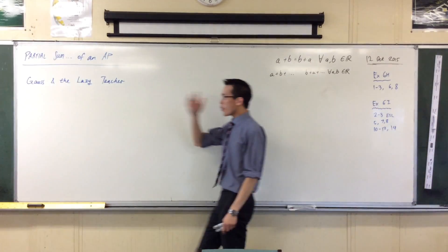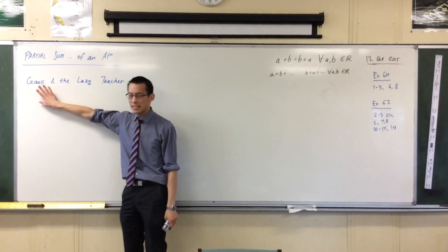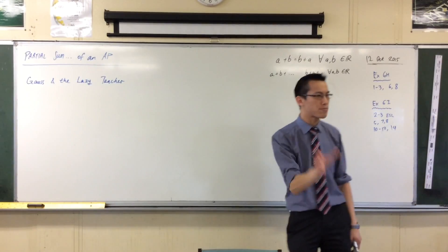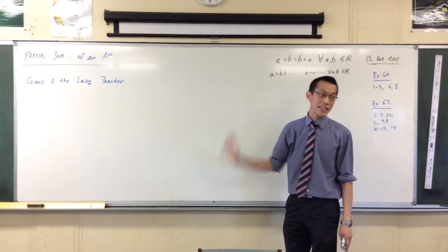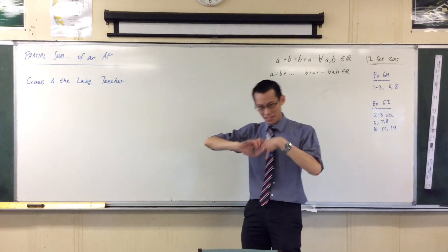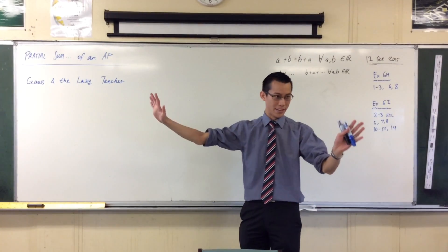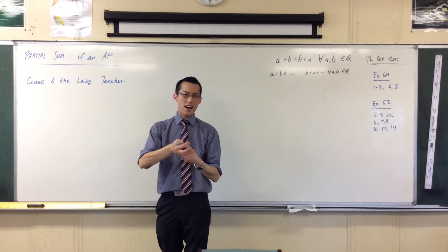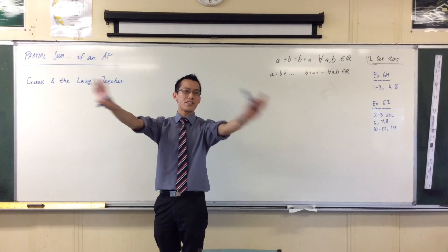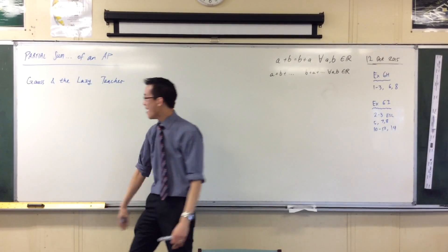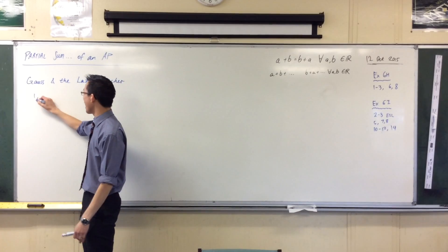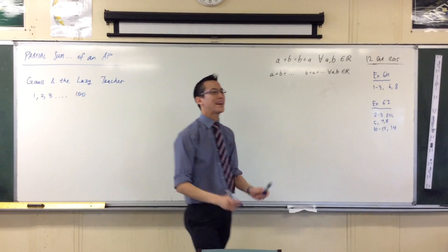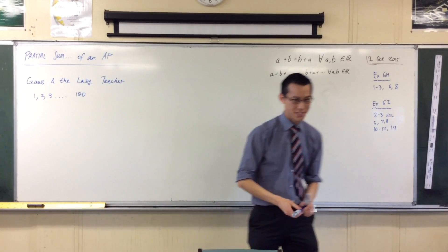The story goes, when Gauss was just a little boy, like early primary school, he had a really lazy teacher who just wanted his students to leave him alone. So the lazy teacher said to the whole class: 'Here's a task for you, we're going to do some mathematics today. I want you to add up the numbers 1 to 100, and then come back to me when you're finished.'